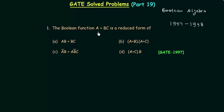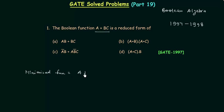The Boolean function a OR (b AND c) is a reduced form of what? We have the minimized function and we have to calculate the original function. The minimized function is equal to a OR (b AND c), as given in the problem, and by using Boolean algebra I will try to find out the original function.